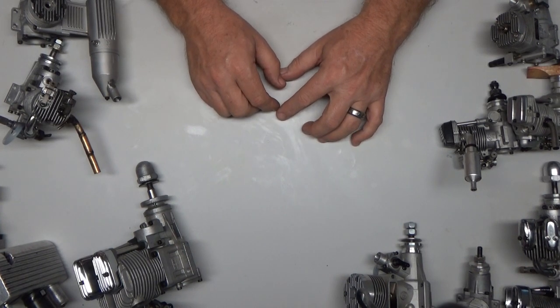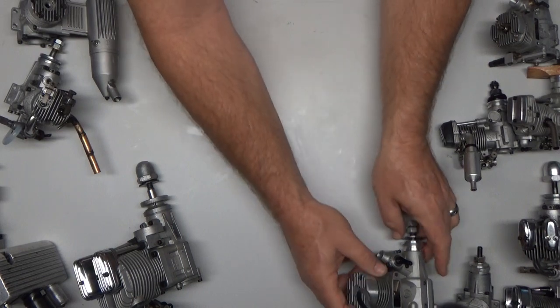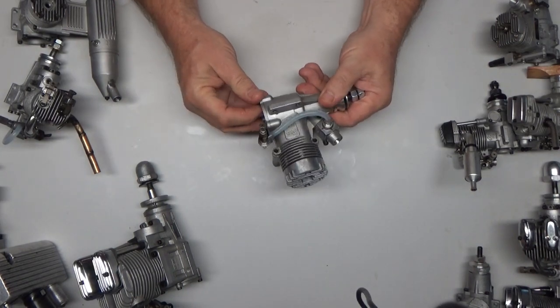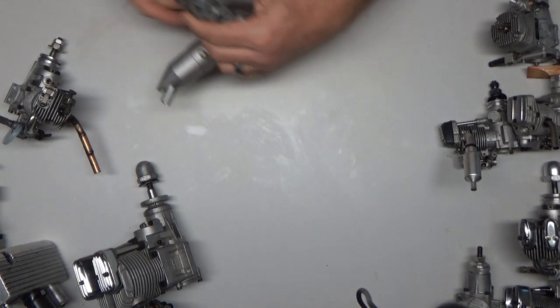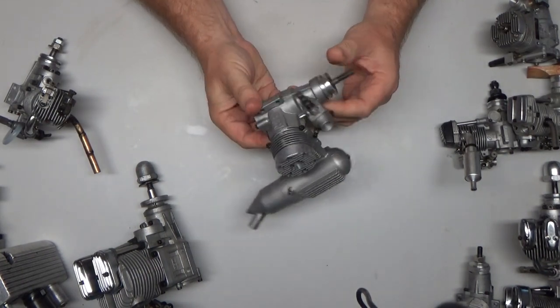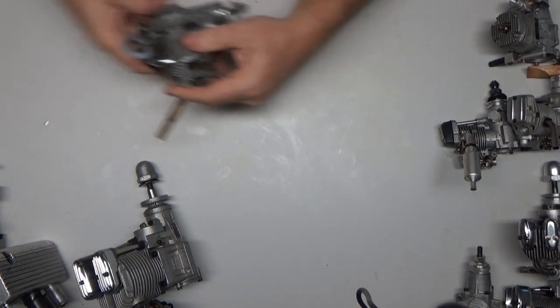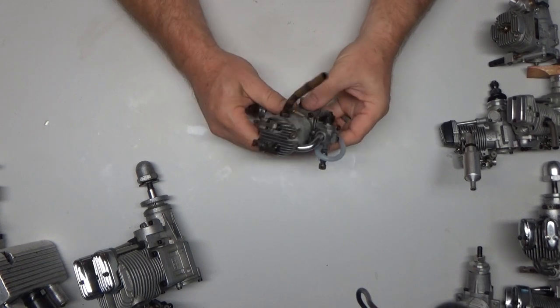So let's just start here real quick: OS 60 FP, exhaust is down below, two-stroke. What's this? OS 46 SF, I think I got this from a very good friend for like $35. Saito 50 open rocker - I made an open rocker. This was a basket case engine that I bought.